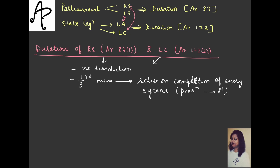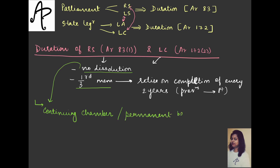The constitution is only telling this much, but there are certain inferences also. Since there is no dissolution, it means they are both the continuing chamber - two-thirds of members will still continue every time. If something is a continuing chamber, it also means it is a permanent body, because we are not dissolving it.